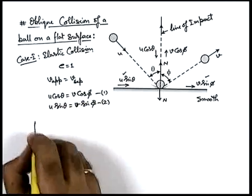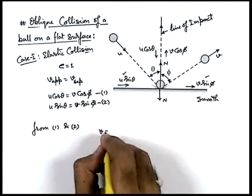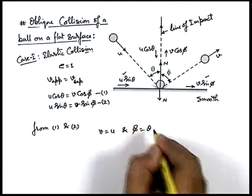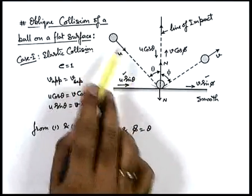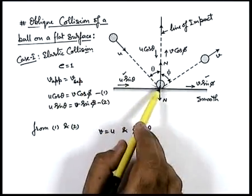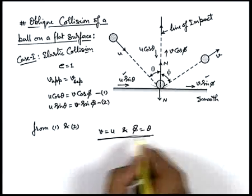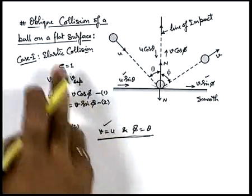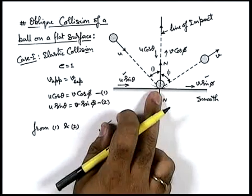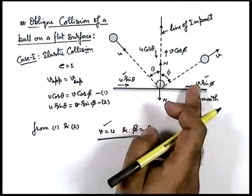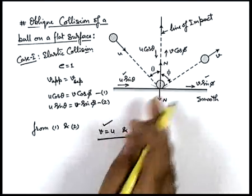From equations one and two, we can see that v must be equal to u and phi must be equal to theta. That means in case of elastic collision, a ball incident on a floor at some angle will rebound with the same angle of reflection and the same velocity. This is because in elastic collision, no energy loss takes place at the time of deformation, so final kinetic energy must be exactly equal to the initial kinetic energy.